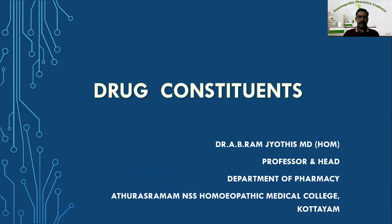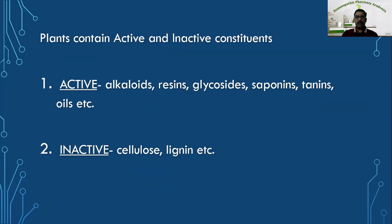Drug constituents, or phytoconstituents, or plant constituents — there are two types of constituents: active and inactive. Active constituents are classified as alkaloids, resins, glycosides, saponins, tannins, oils, etc. Inactive constituents also contain some nutritional constituents of plants like carbohydrates, lipids, proteins, etc., but these nutritional constituents are not of much pharmacological action, so I am excluding such nutritional constituents.